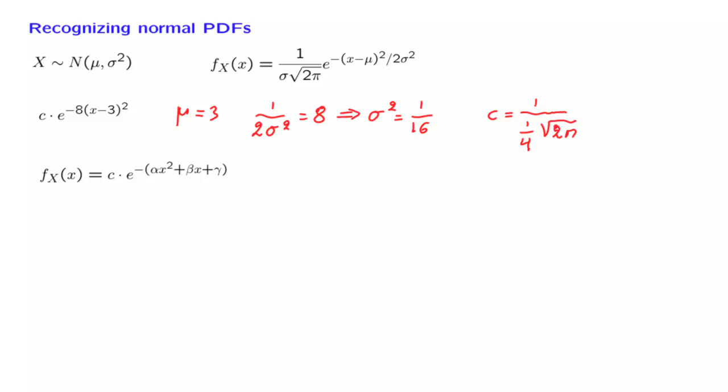Now suppose that somebody gives you a PDF of this form. It's a constant times the negative exponential of a quadratic function in x. We will argue that this PDF is also a normal PDF, and identify the parameters of that normal. First, let's start with a certain observation.